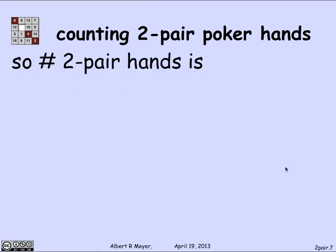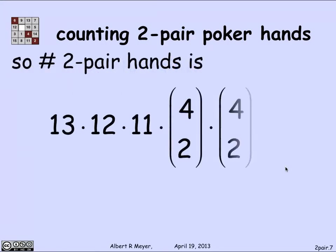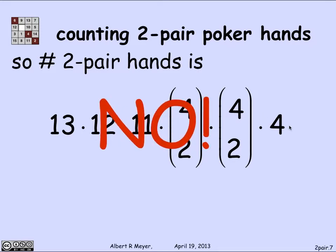So I can count the number of two-pair hands fairly straightforwardly. There are 13 choices for the rank of the first pair, 12 for the second, 11 for the rank of the third card, four choose two ways to choose the suits of the first pair, four choose two ways to choose the suits of the second pair, and four ways to choose the suit for the last card. So this is the total: 13 × 12 × 11 × 4 × (4 choose 2) × (4 choose 2) — but that's not right. There's a bug. What's the bug?